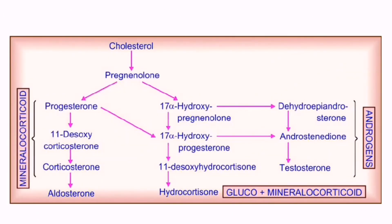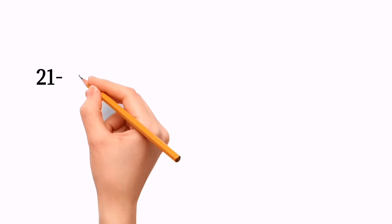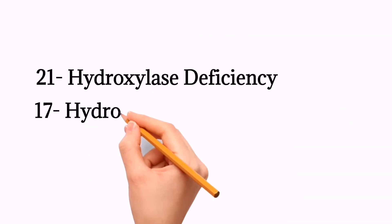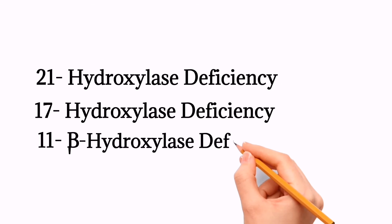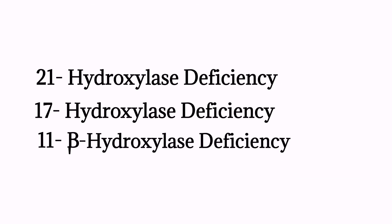Whenever we talk about congenital adrenal hyperplasia, a complex biosynthesis chart comes to mind — the steps in the synthesis of adrenal hormones and the involved enzymes. But we don't need to learn this chart because it is not tested in university exams or board exams. CAH presents with deficiency of the following enzymes: 21-hydroxylase deficiency, 17-hydroxylase deficiency, and 11-beta hydroxylase deficiency.